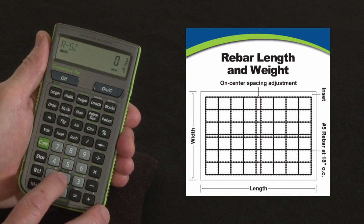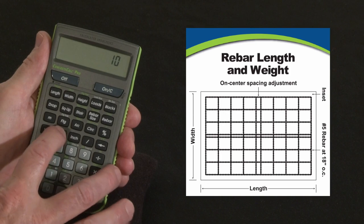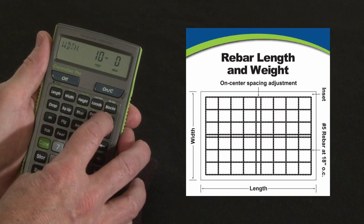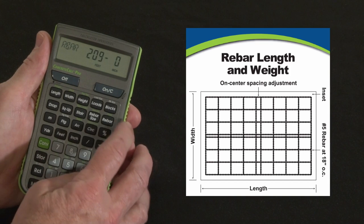So now we can go back to our 10 by 10 room, or pad rather. Now press rebar. We're going to need 209 lineal feet, since it's much closer together, we need a lot more of it.